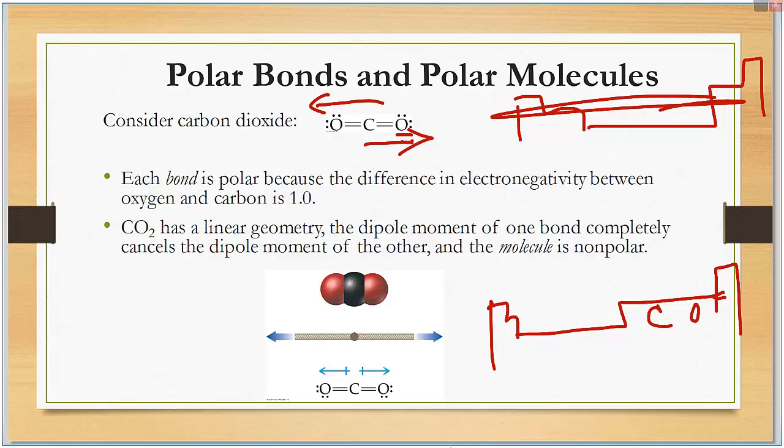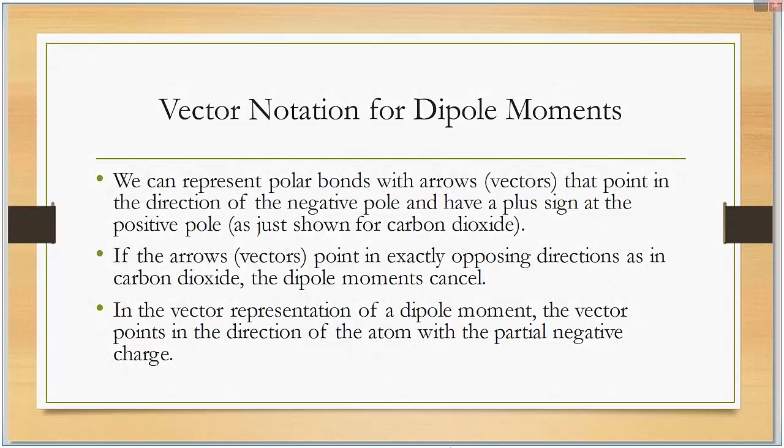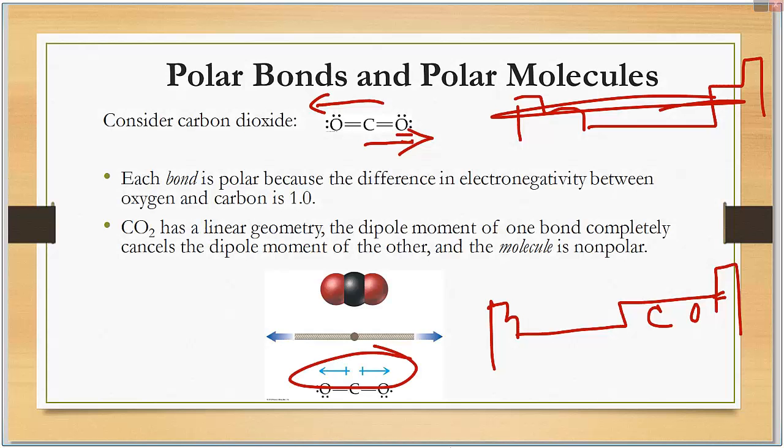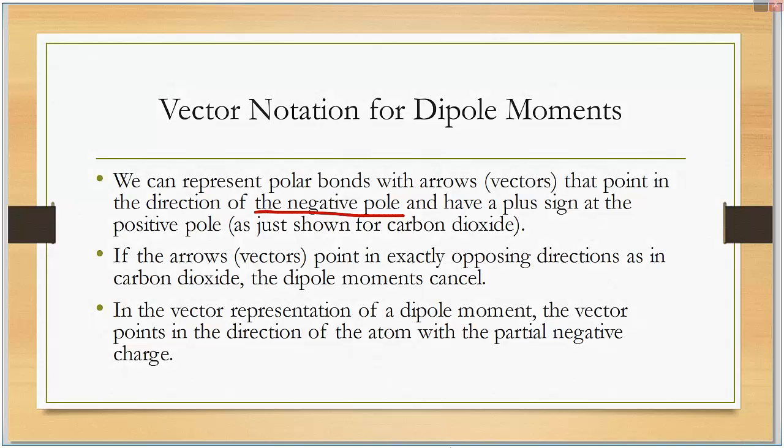However, CO2 has linear geometry. The dipole moment of one bond completely cancels out the dipole moment of another and the molecule is then nonpolar. Notice they're going in exact opposite directions. We can represent polar bonds with arrows or vectors that point toward the negative pole and have a plus sign at the positive pole. The arrow goes towards the oxygen because it's more electronegative. There's a positive sign under the carbon because it's less electronegative.